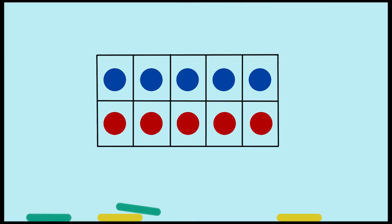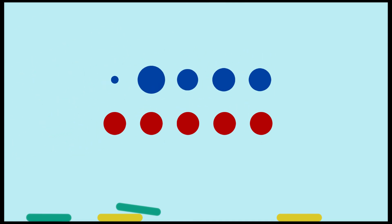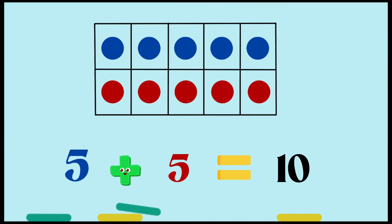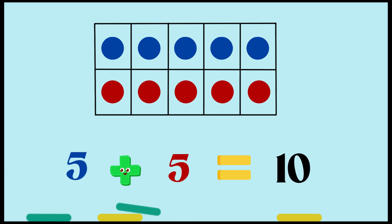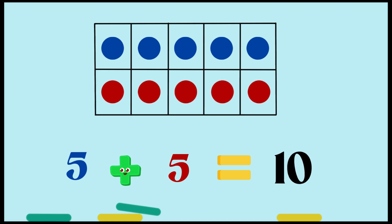Next up — five blue dots and five red dots. As you can see in the tens frame, how many blue dots? Five. And how many red dots? Five. Five plus five equals 10. Five and five makes 10.